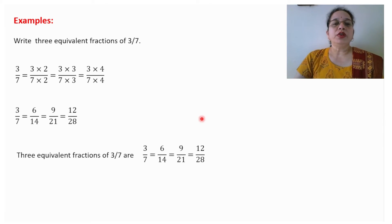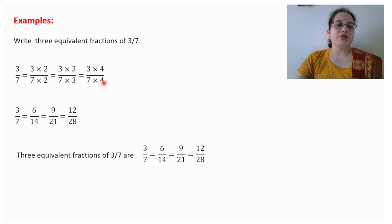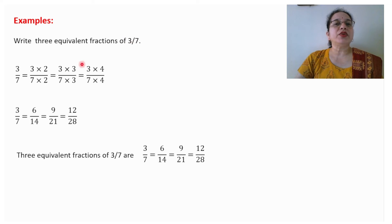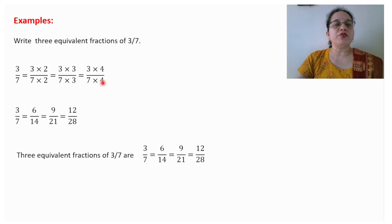Now we will do some examples to get a proper concept of equivalent fractions. Write 3 equivalent fractions of 3/7. What we will do is multiply by 2/2, then multiply by 3/3, and then multiply by 4/4.